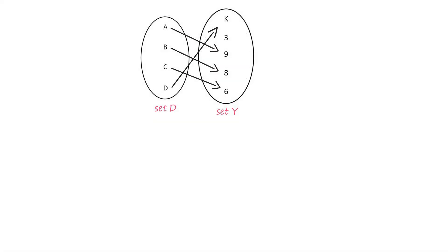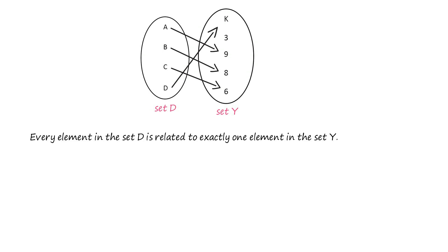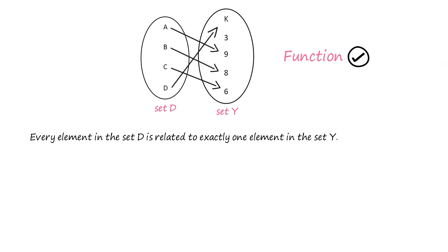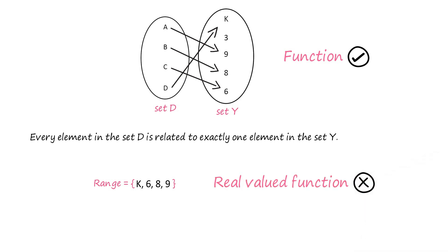Consider the sets D and Y related to each other as shown. Pause this video and try to figure out if this function is a real valued function. Every element in the set D is related to exactly one element in the set Y, so the given relation is a function. In this case, the range consists of the members K, 6, 8, and 9. Since K is not a real number, the range is not the set of real numbers and hence this function is not a real valued function.